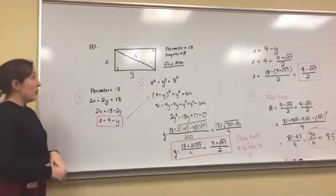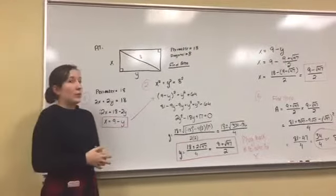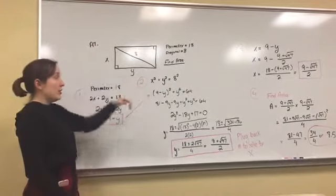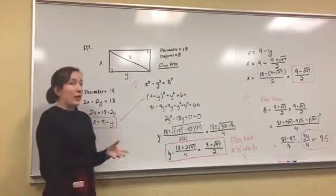I have problem A7, and you're given a rectangle with two pieces of information about it. They give you that the perimeter, in my case, was equal to 18, and they give you the length of the diagonal that splits the rectangle into two triangles. My length of that is 8, and they ask you to find the area.